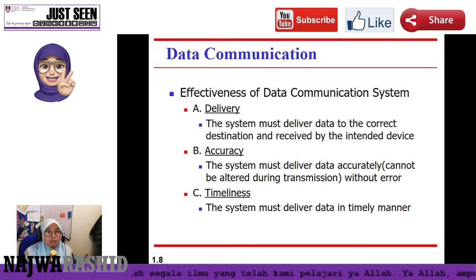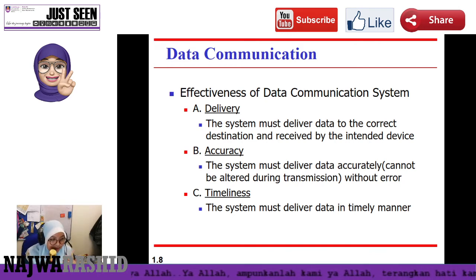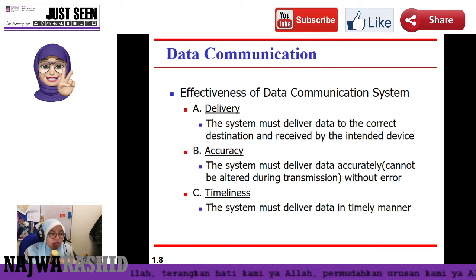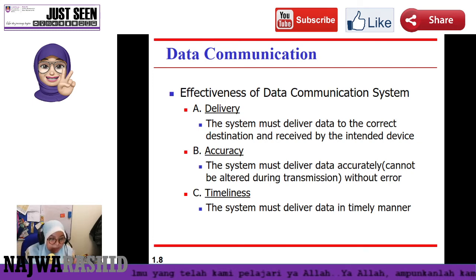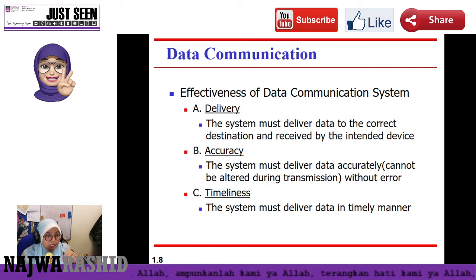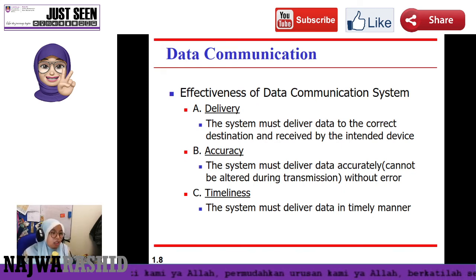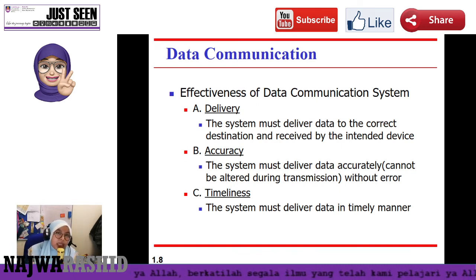The second parameter is accuracy of data. When you type 'hello,' the data must be delivered as 'hello' to your receiver — data cannot be altered. For example, if you say 'hello' but your friend receives 'help,' that is not effective data communication. The third parameter is timeliness — the system must deliver the data in a timely manner. Those are the three parameters: delivery, accuracy, and timeliness.